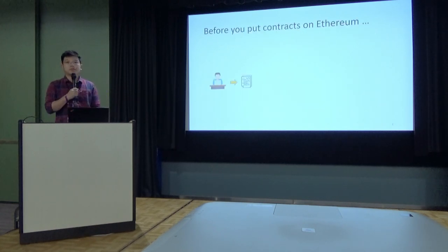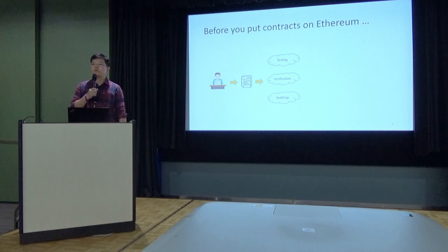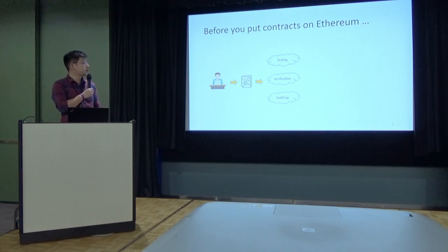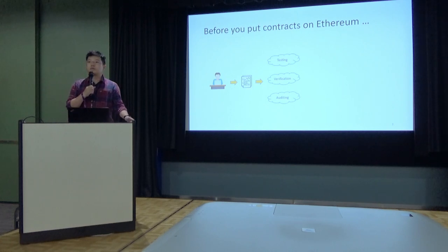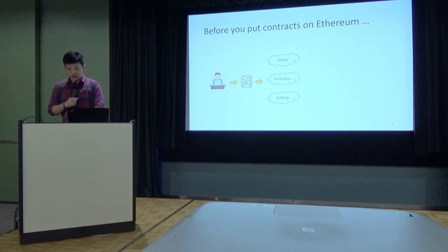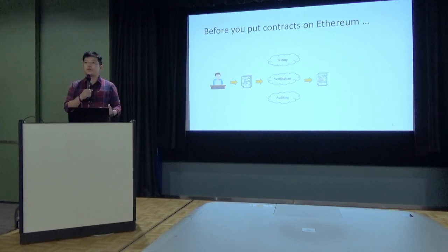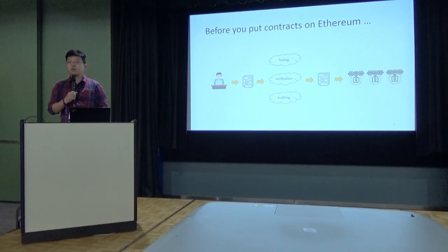Commonly when you write a smart contract, you might want to do a validation procedure. For example, you can write a group of test cases to test whether your contract works or not, or you can use a verification tool to verify whether a specific property holds, or you can find an auditing team to send your contract to them and get their feedback. After that, hopefully you can get useful feedback and optimize your smart contracts, and put them on the blockchain.